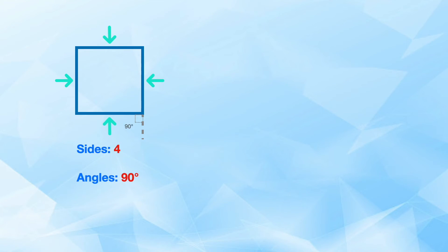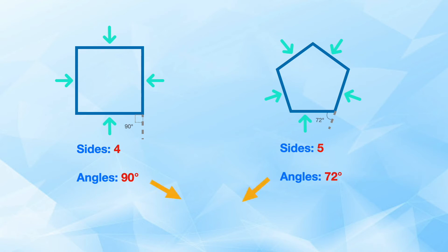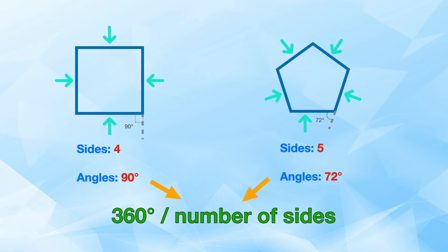The same goes with the square — it has 4 sides with the same length, and we turn 90 degrees to draw each side. The same sequence goes with pentagons and all other polygons. So we can get the exterior angle of any equilateral polygon by dividing 360 by the number of sides.